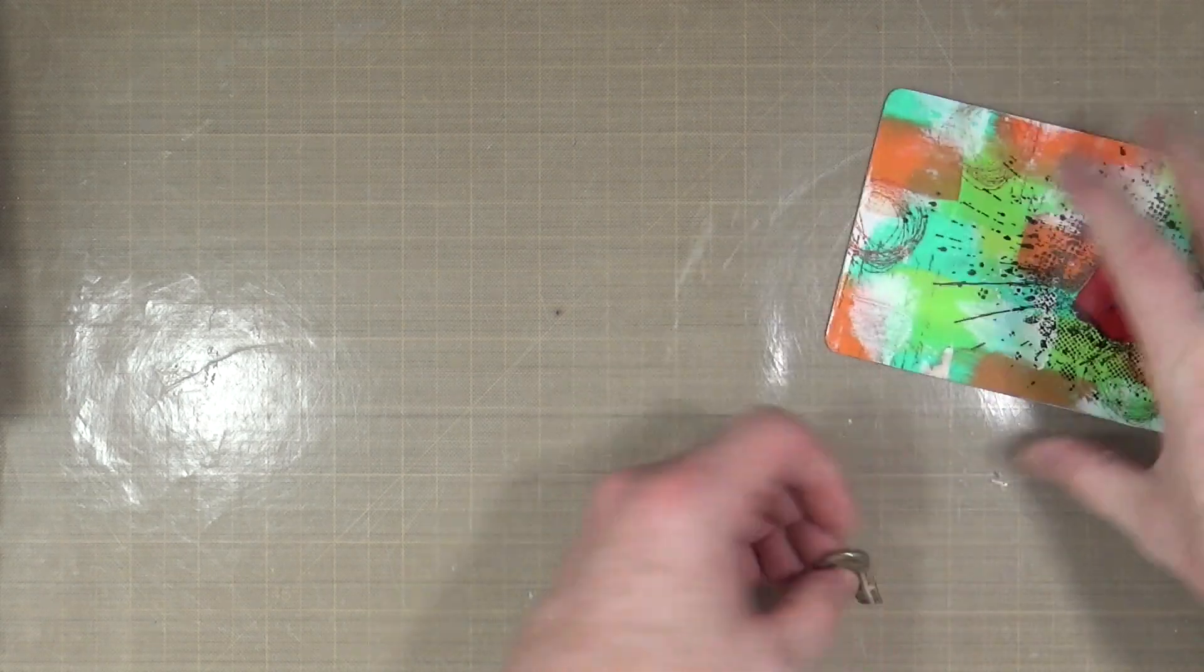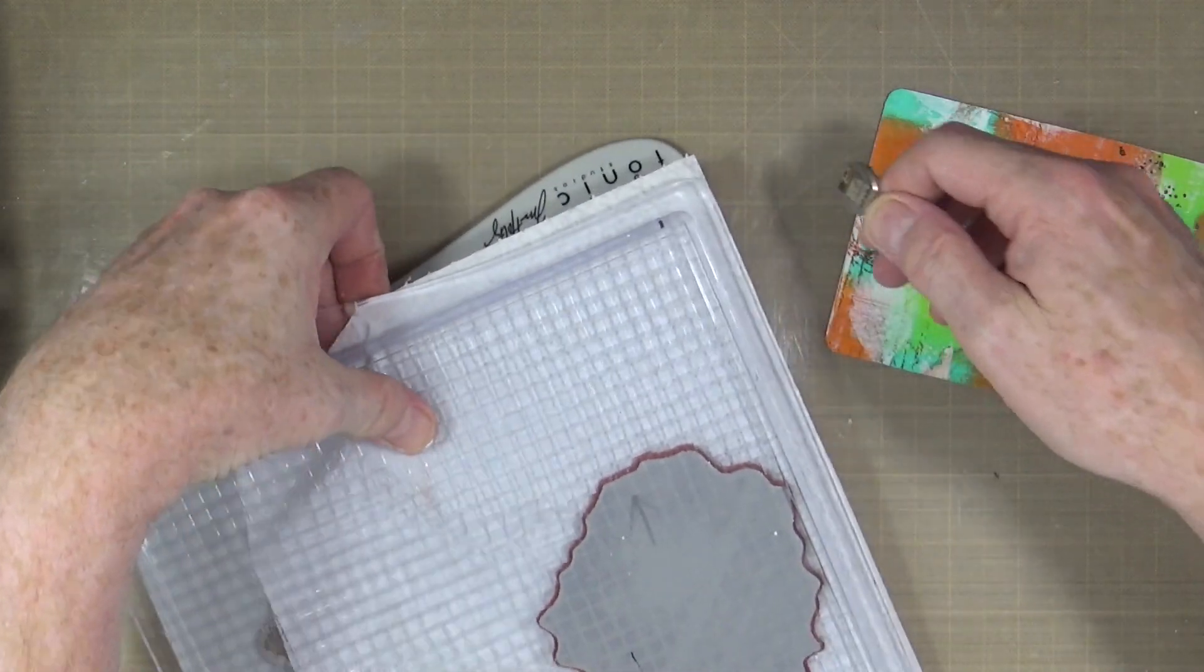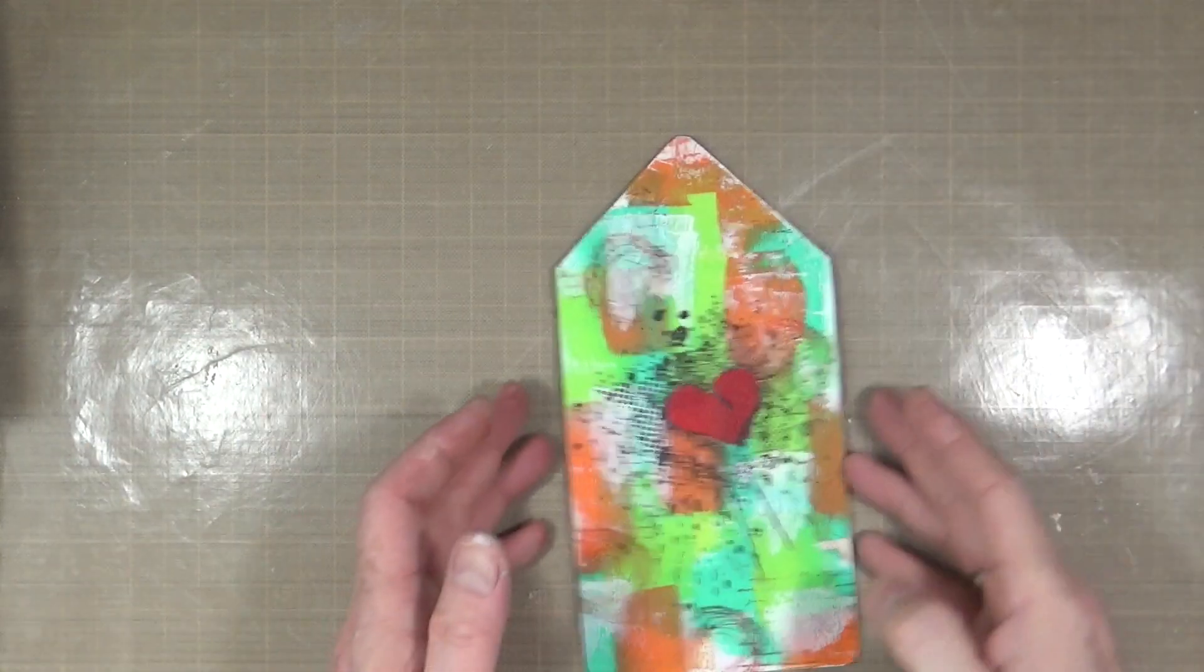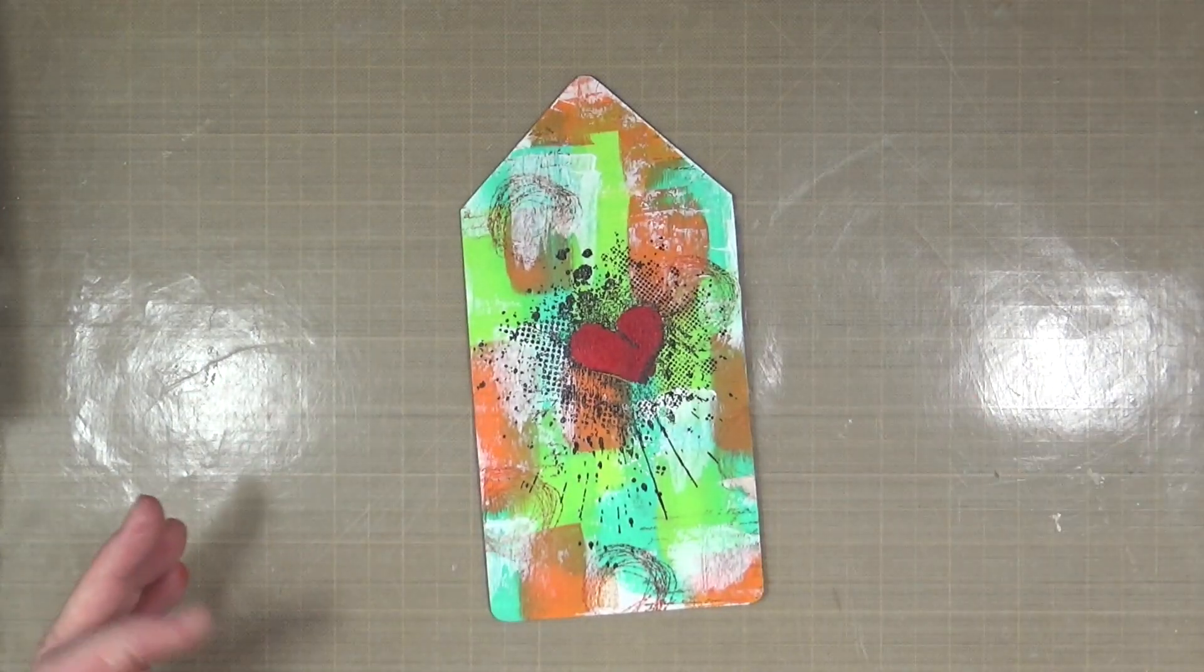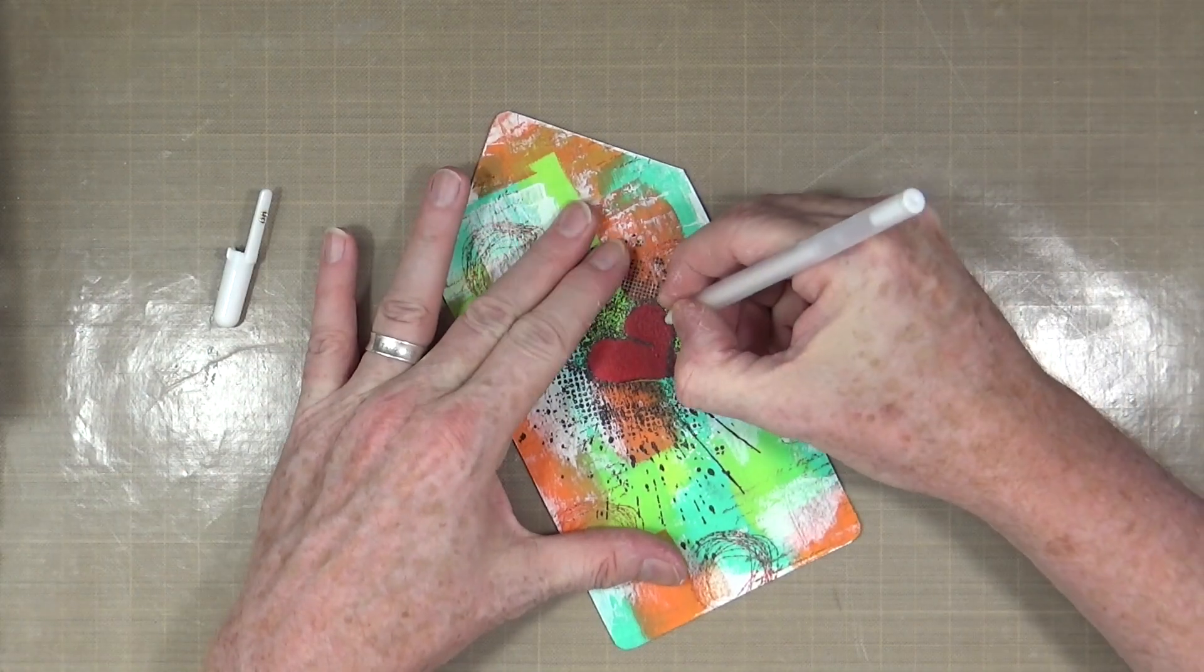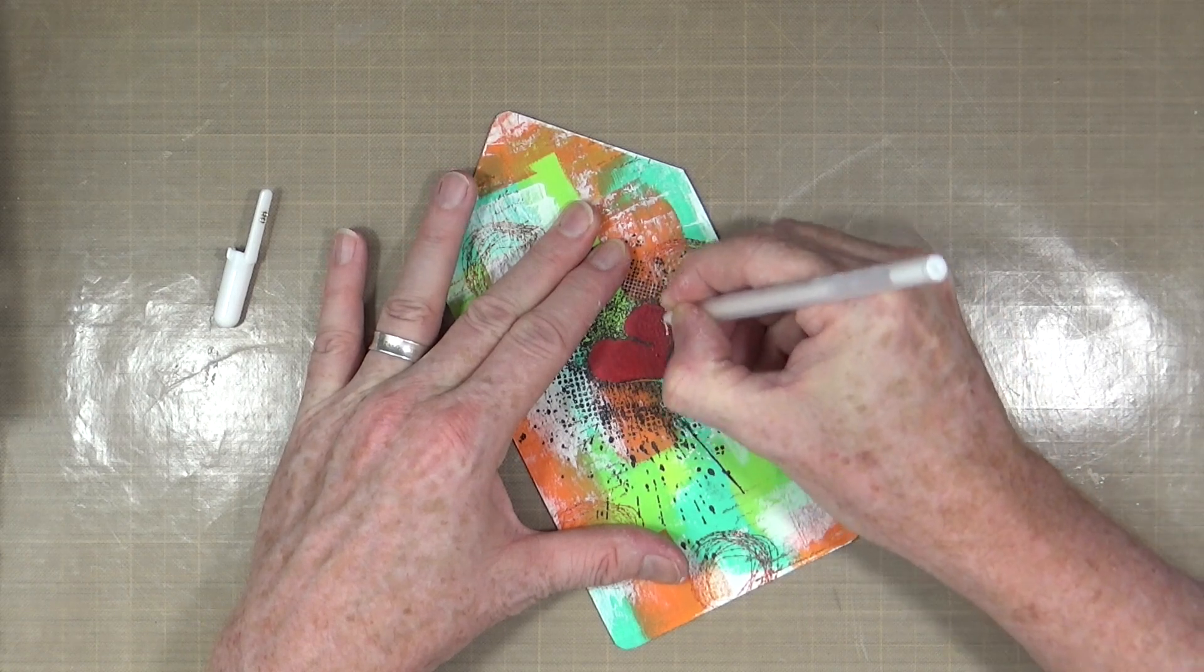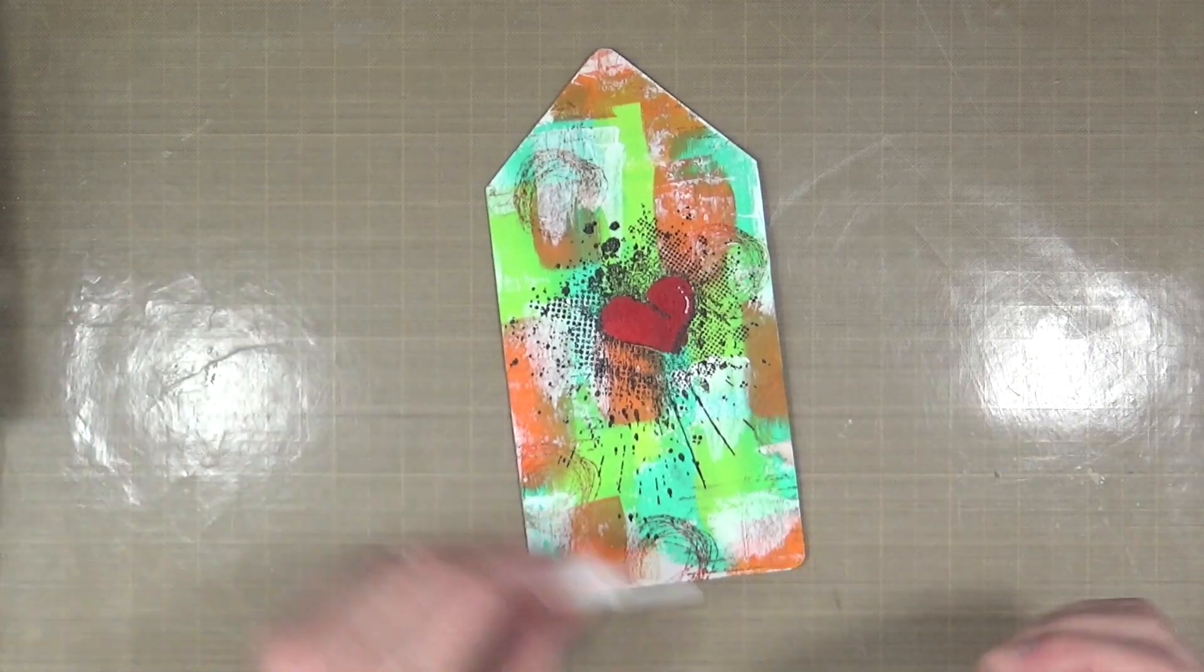There we go. Like that, like the look. So I just want to get a white jelly roll pen and then let's just add maybe just a couple little highlights just on there like that. That'll do.